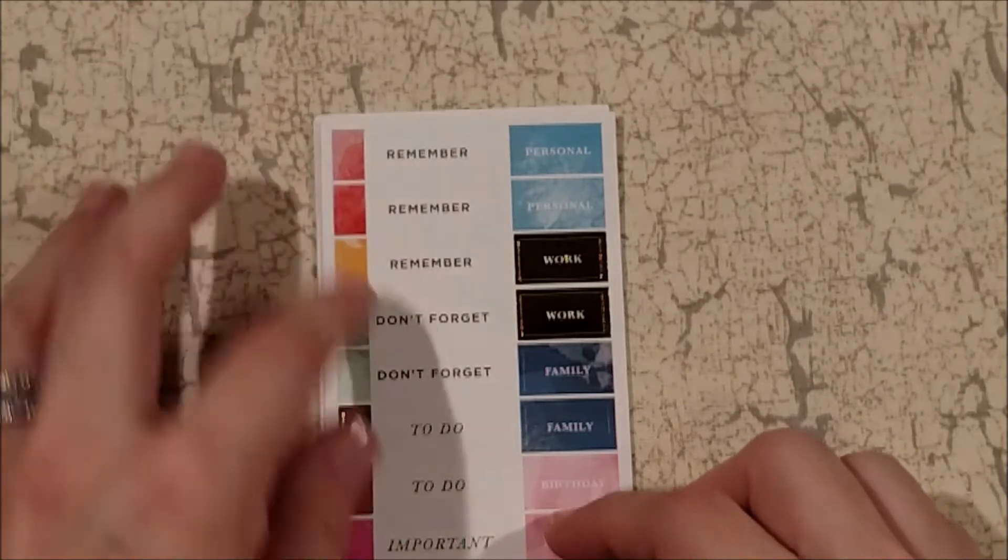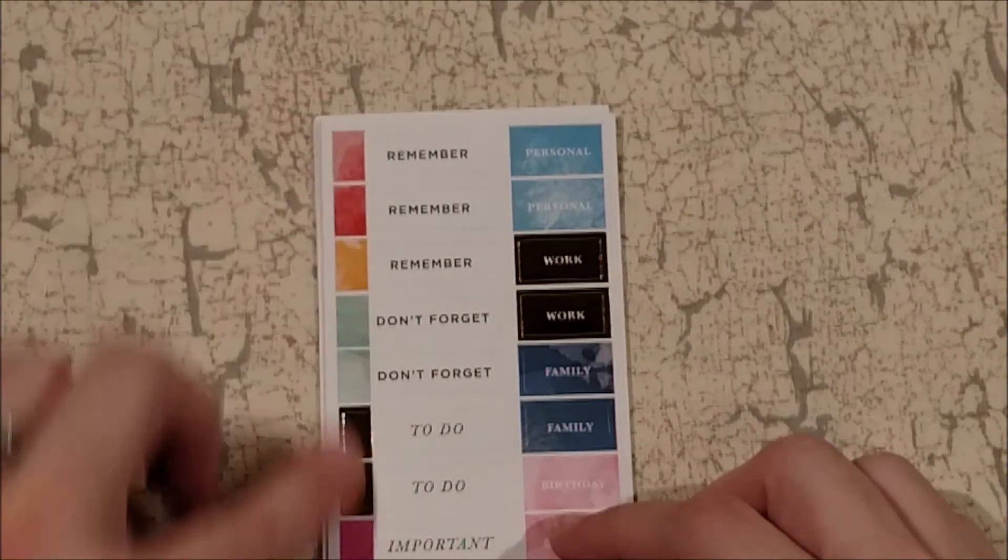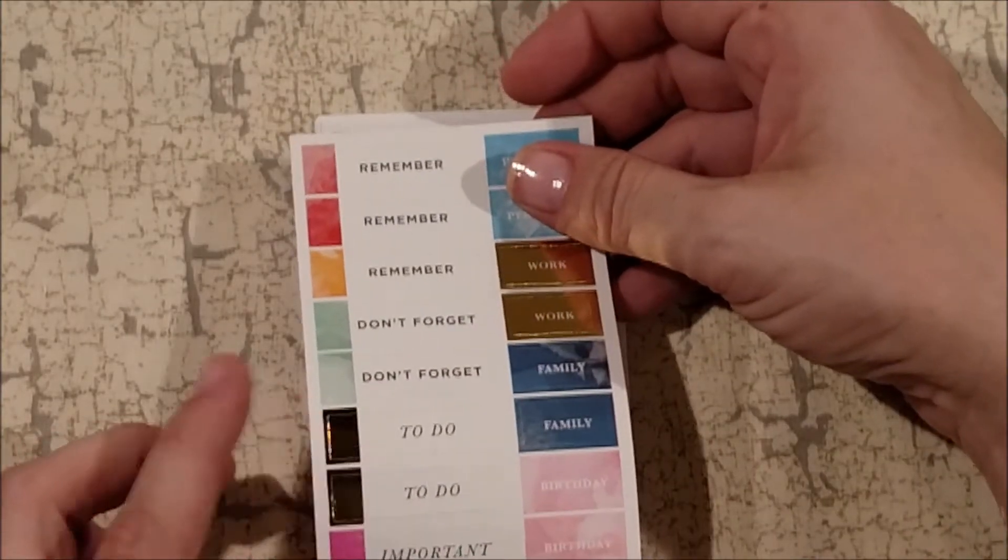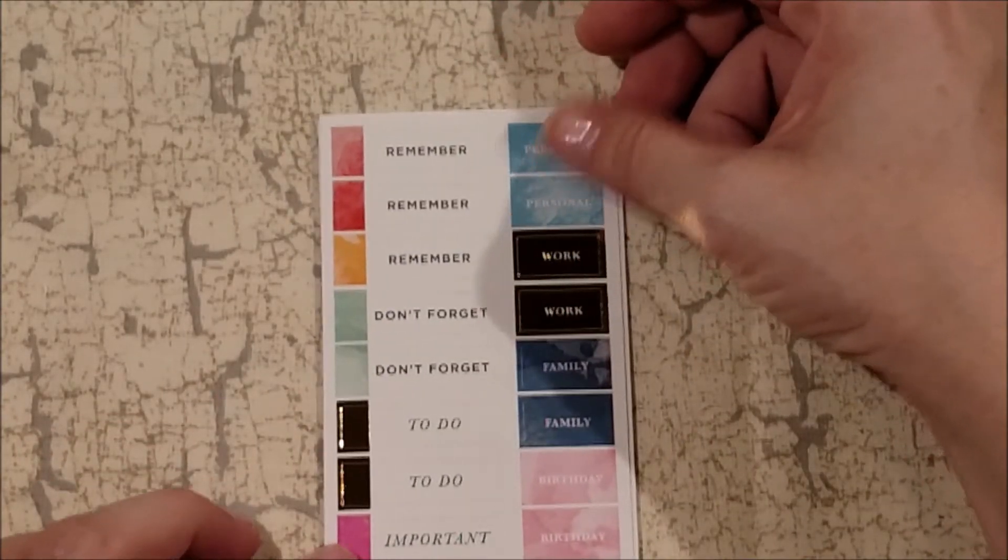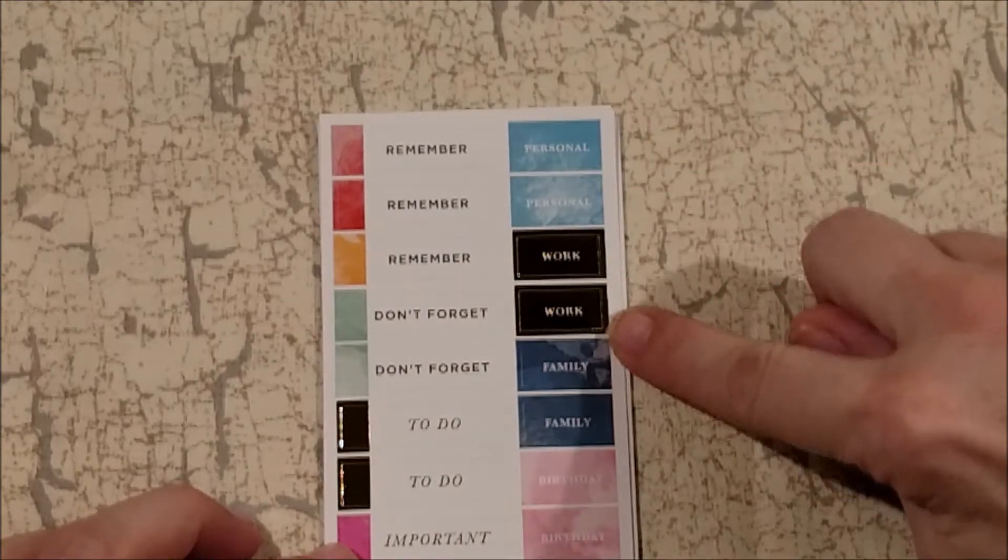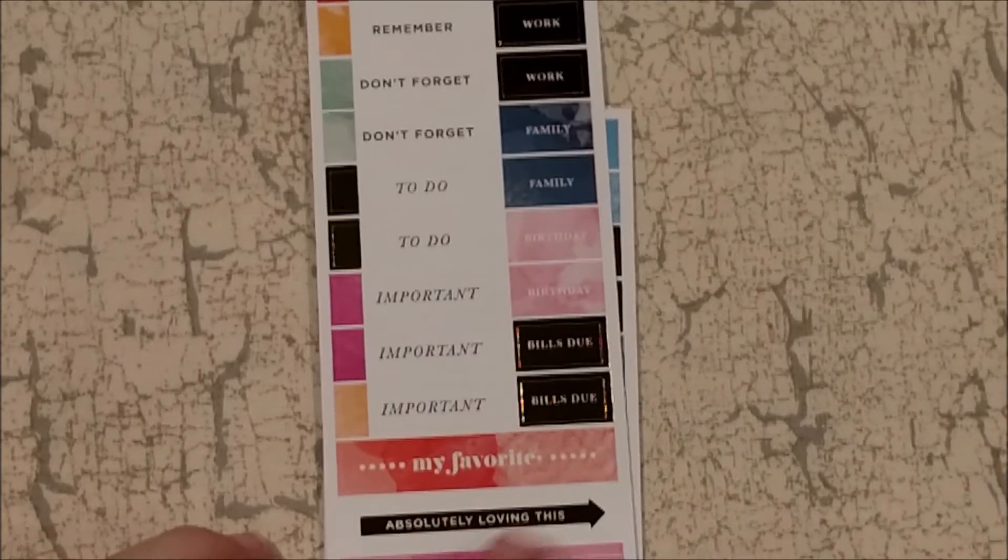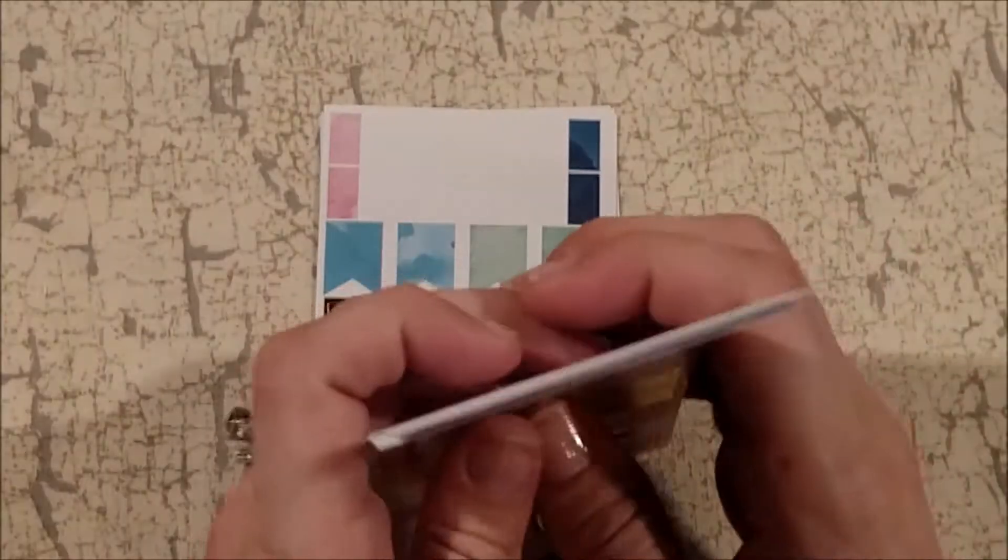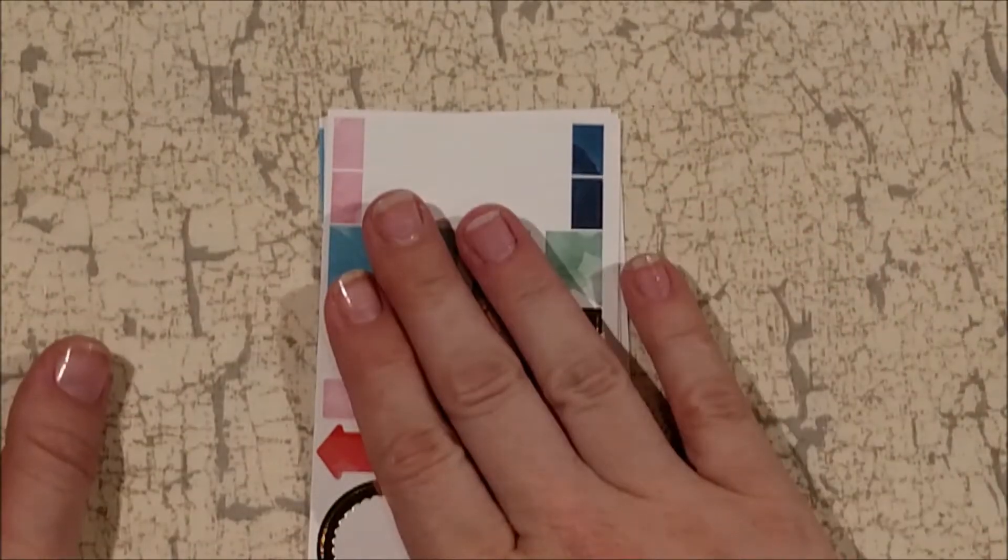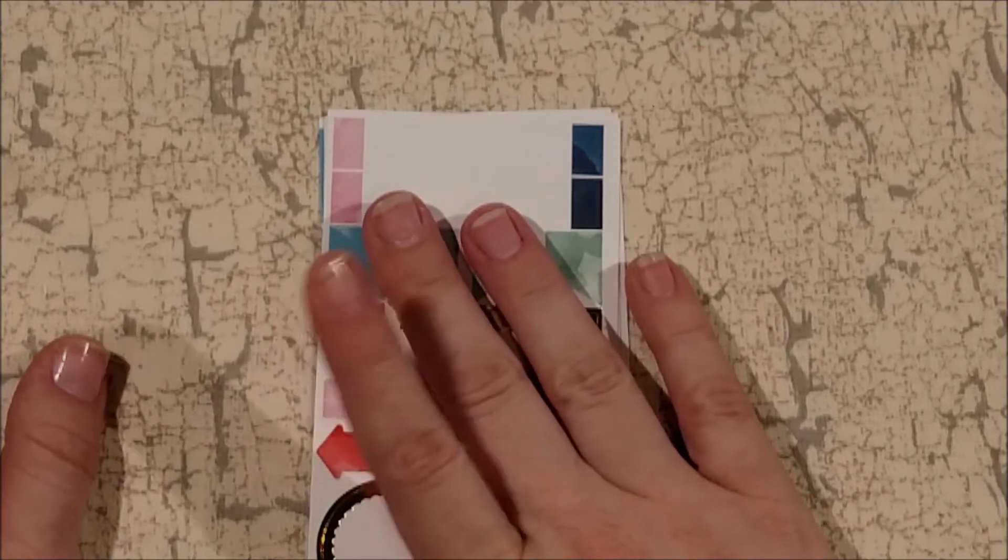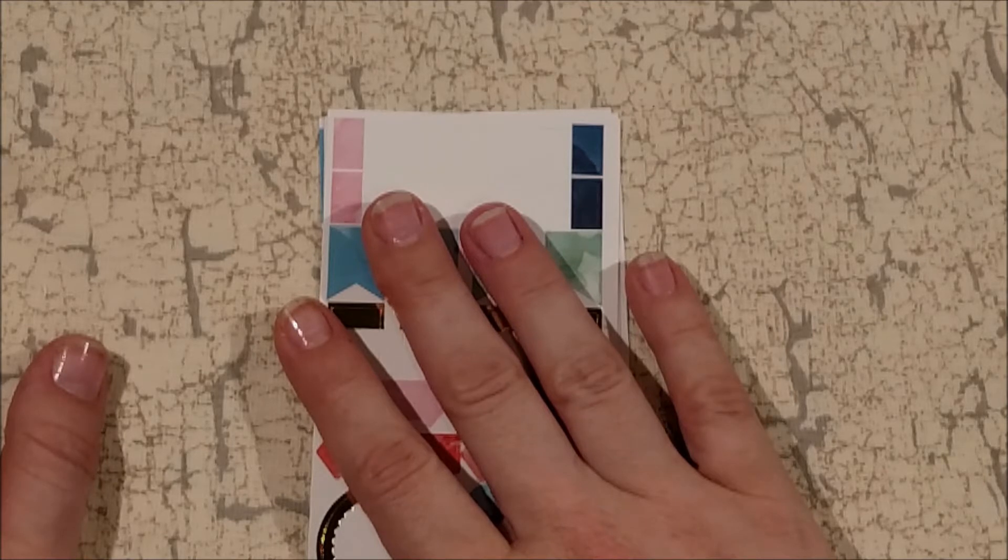All right and then this sheet is really cute. So you get these flags here that say 'remember,' 'don't forget,' 'to do' - the to do ones are foiled. And then over here it says 'personal,' 'work,' 'family,' 'birthday,' and then 'bills due,' three importance, 'my favorite,' 'absolutely,' 'love this,' and 'documented.' And you get two sheets of those in this sticker pack.